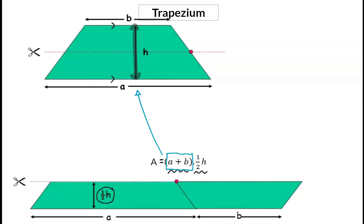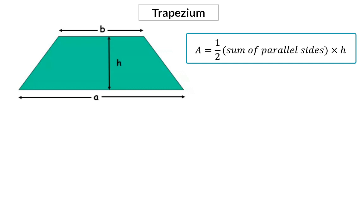So now we can see that the formula for the area of a trapezium is half of the sum of the two parallel sides multiplied by the height.